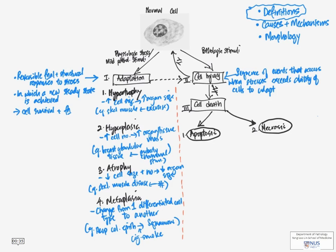We should go through the differences a little bit later, but do take note that they are different in terms of the morphology. So the cells actually look different and also in terms of the mechanisms of cell death and also the triggers. Necrosis is always pathological, so it's always due to abnormal stimuli, whereas apoptosis can either be physiologic or pathological.